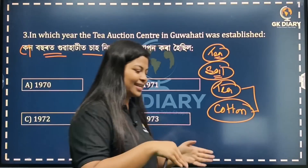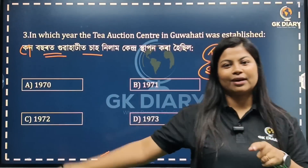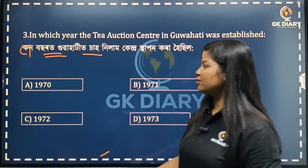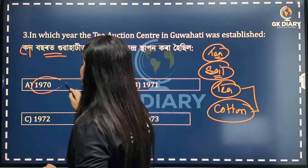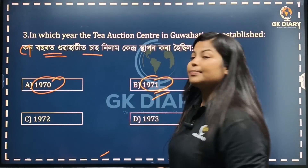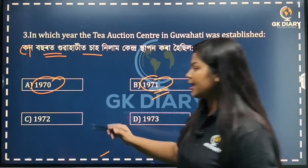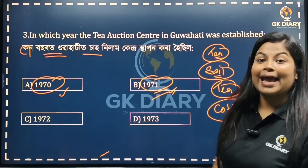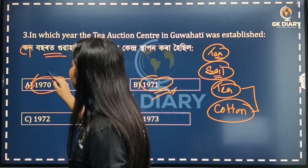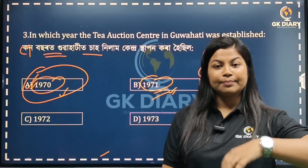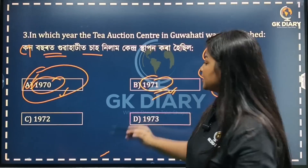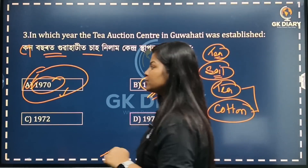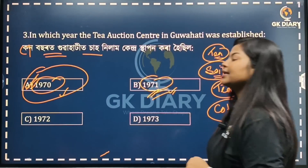Obviously you know that Guwahati is there. You can see it clearly. The table using 1970 — and the Tea Auction Center was established. The correct answer is Option A, 1970.